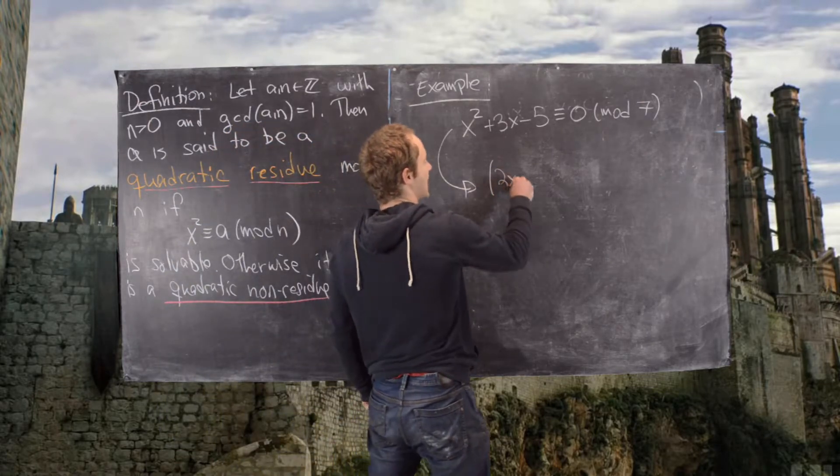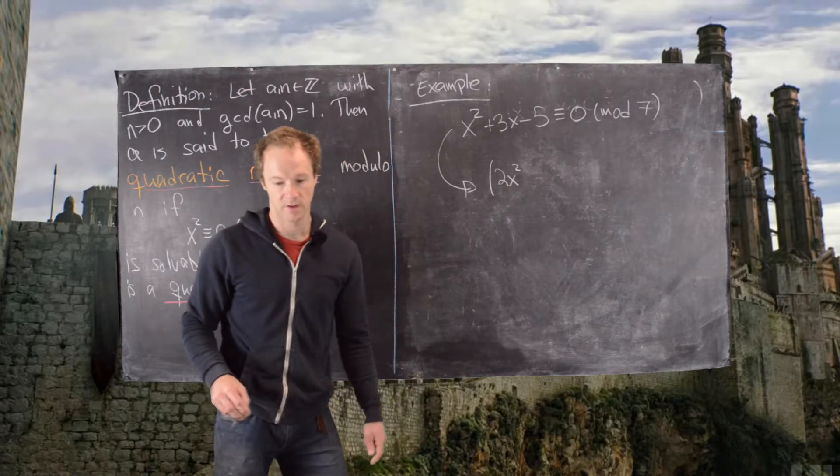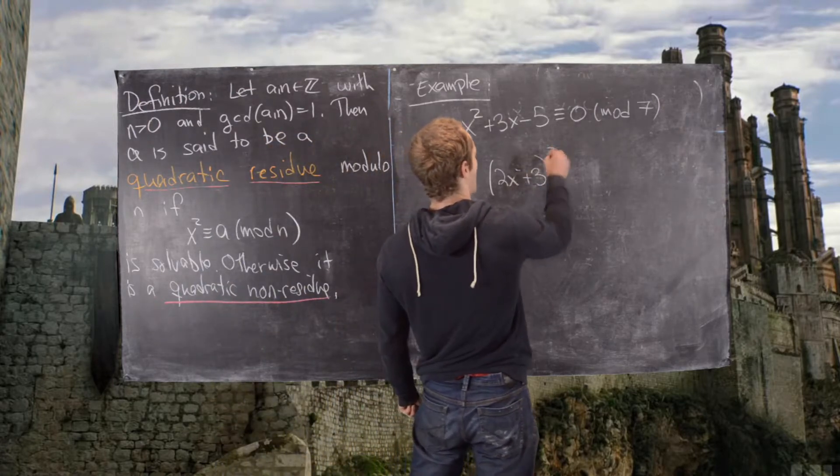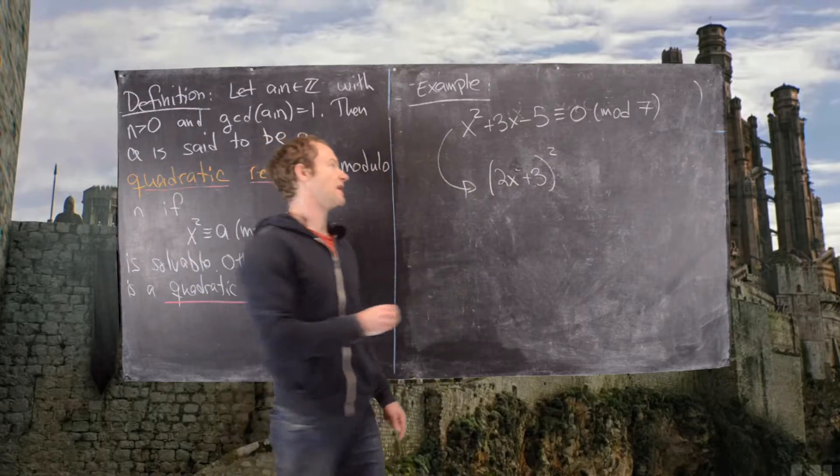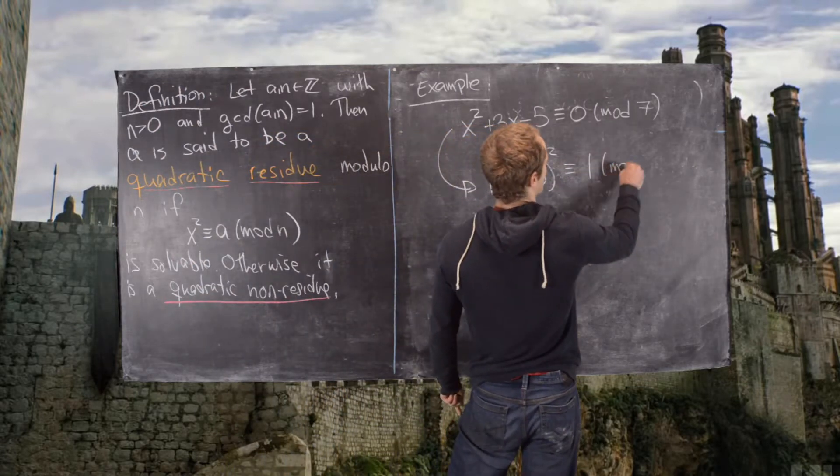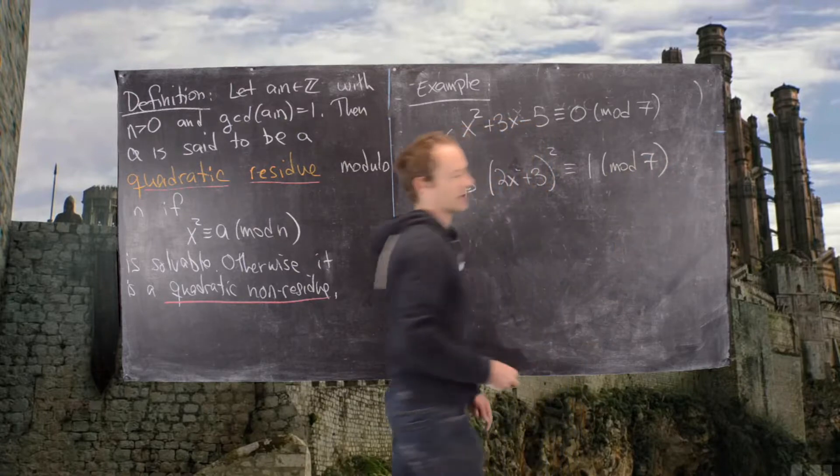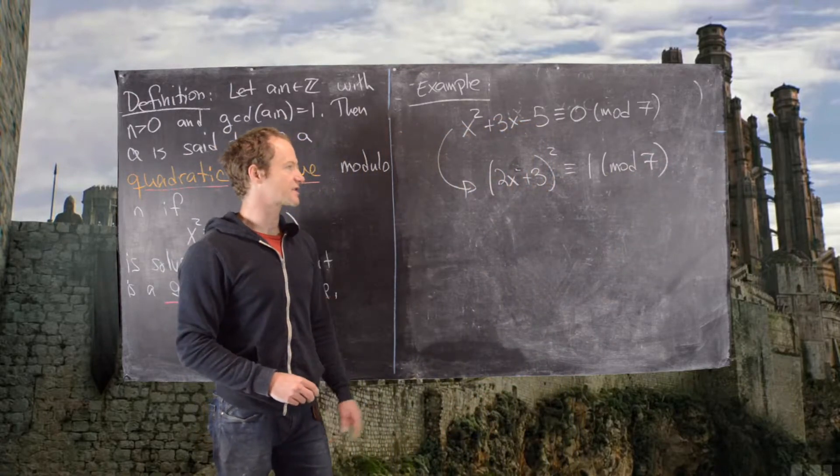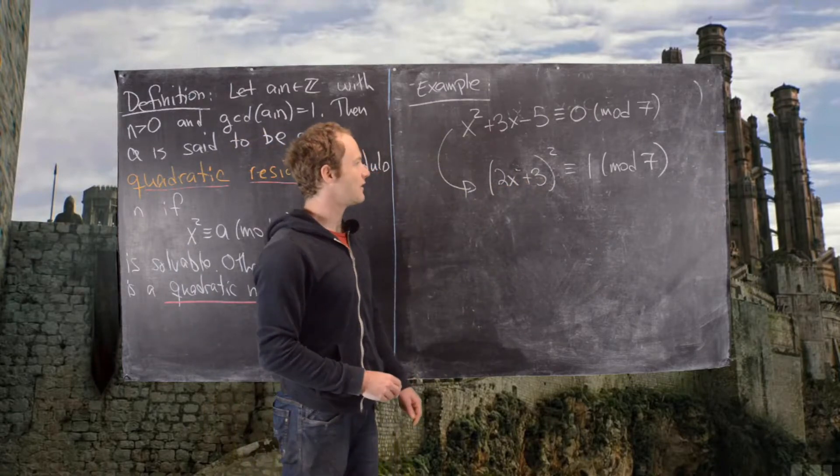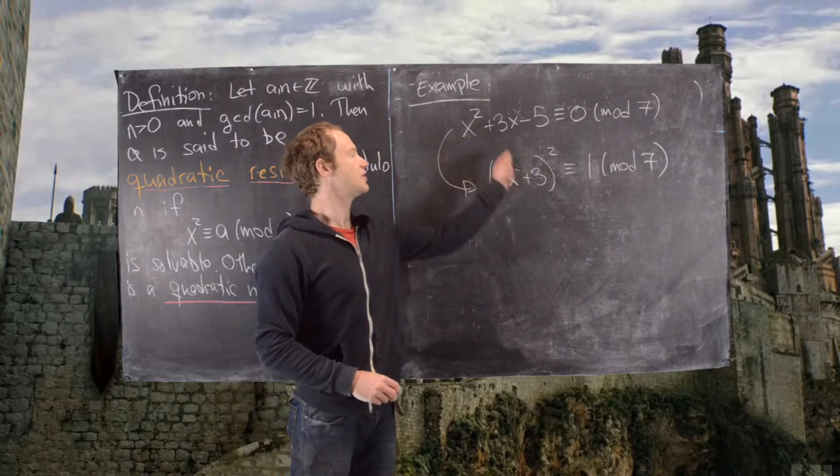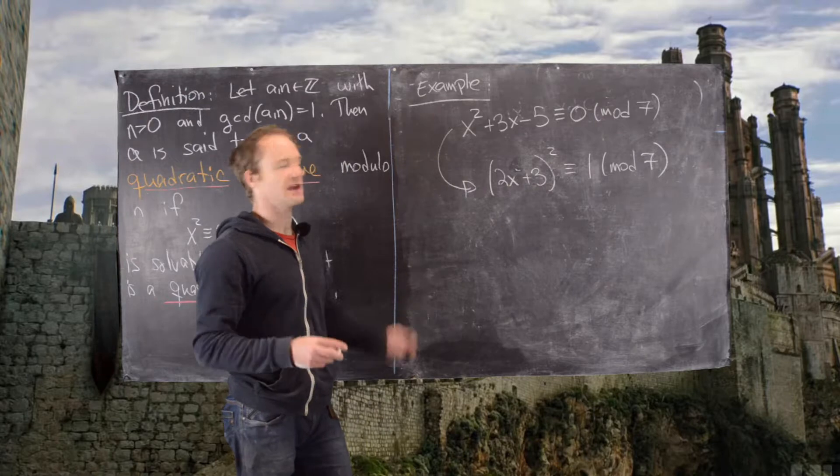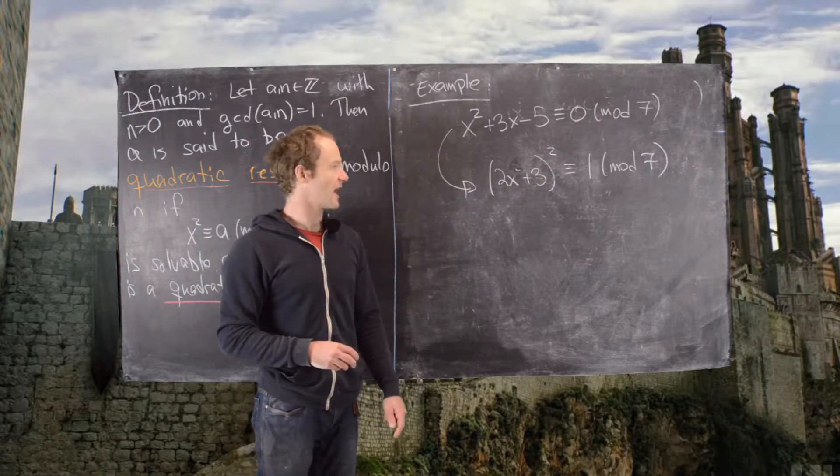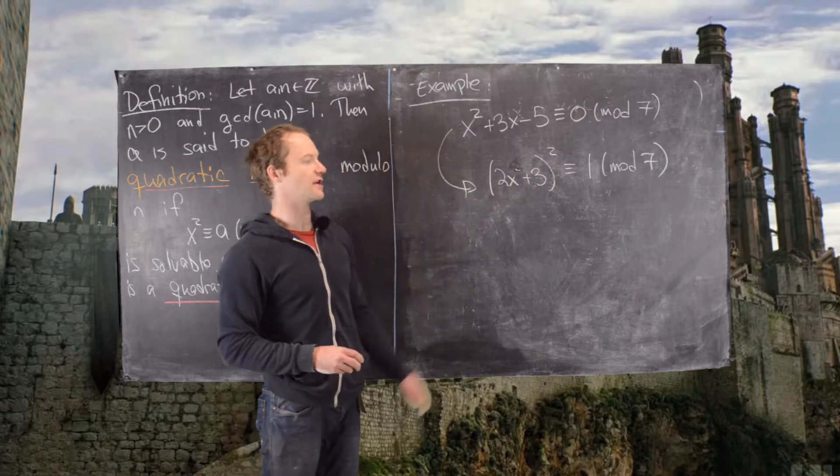So using this strategy that was outlined before, we can transform this equation into the following equation. So this will be 2x plus 3, the quantity squared, is congruent to 1 mod 7. So you can check that's the same. Notice here we get 2x squared plus 12x plus 9. You can move the 1 over and then everything checks out. But these are equivalent equations.